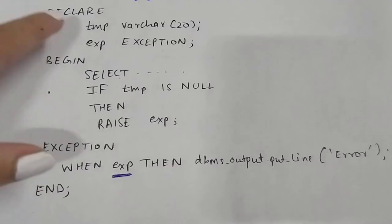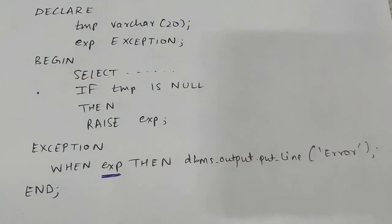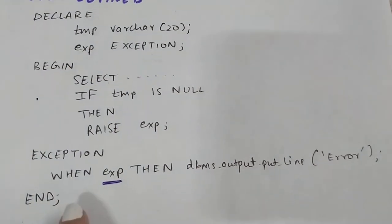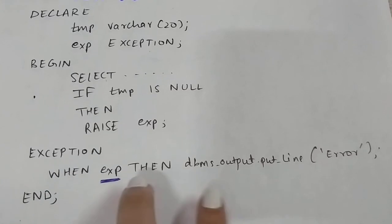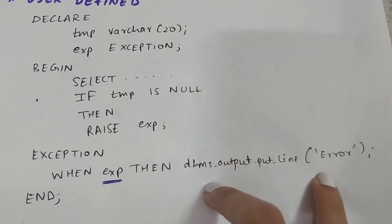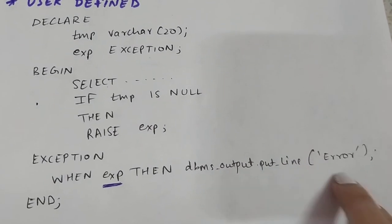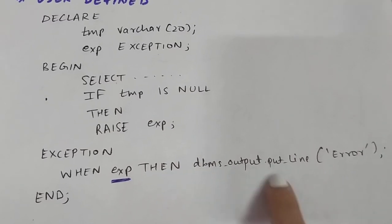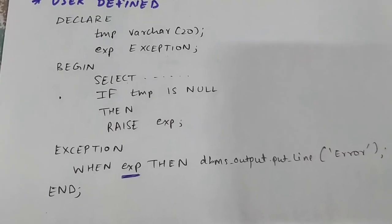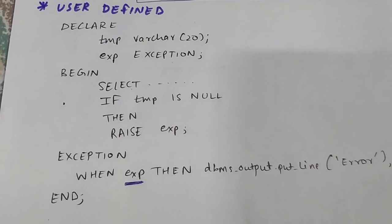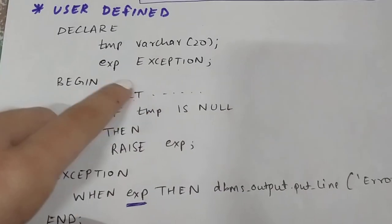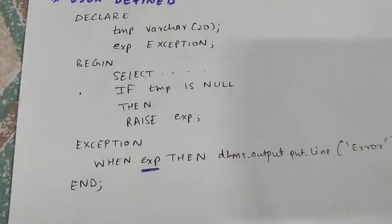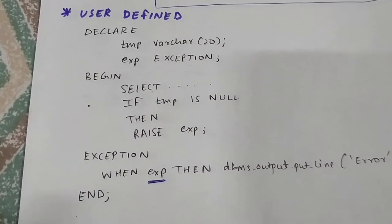The third step is to handle the exception. In the EXCEPTION block you write WHEN exp THEN and whatever needs to be done — in this case I'm simply printing an error message: DBMS_OUTPUT.PUT_LINE('Error'). So to summarize, for user defined exceptions you have to declare an exception, raise an exception, and then handle the exception. Hope this video will help you — thank you for watching, goodbye.